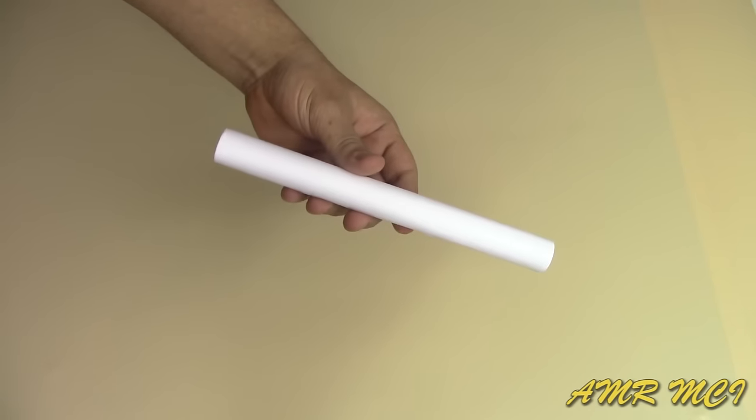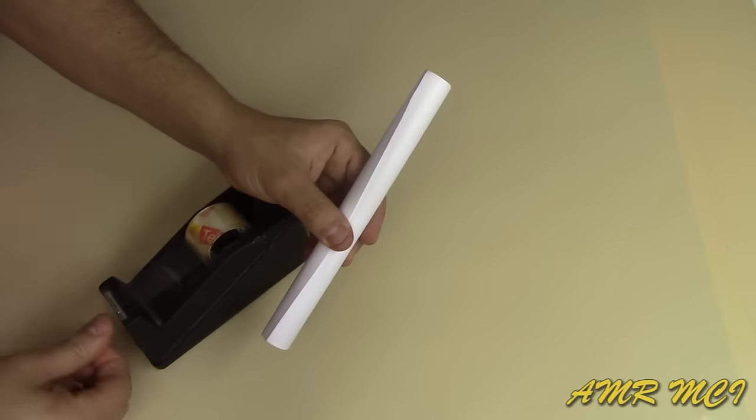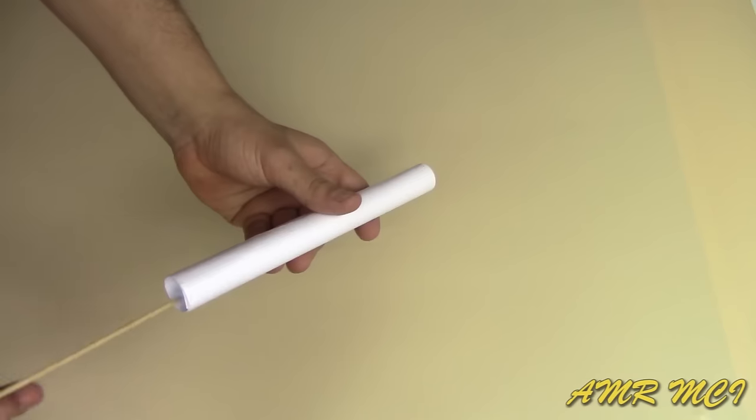To make the second one, get a tube of paper glue and roll a sheet of paper with it, fix it with some tape and then take the tube out.